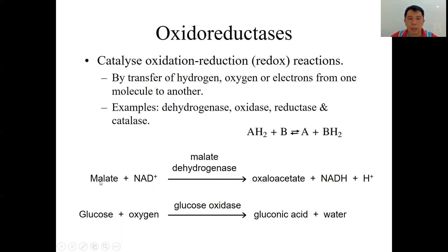For example, in the Krebs cycle, malate dehydrogenase catalyzes the oxidation of malate using NAD⁺. Malate is oxidized into oxaloacetate, while NAD⁺ is reduced to NADH. Another example: glucose reacts with oxygen, catalyzed by glucose oxidase, to form gluconic acid and water. Here glucose undergoes oxidation, while oxygen undergoes reduction.